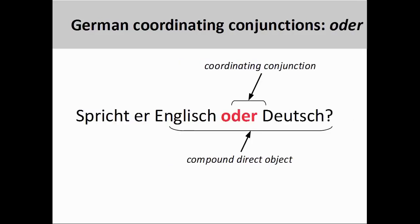The coordinating conjunction oder, meaning OR, is used when presenting alternatives. These alternatives can be in the form of words or independent clauses. For example, in the sentence 'Spricht er Englisch oder Deutsch?' (Does he speak English or German?), oder is used to form an alternative between the languages that the subject speaks. Both languages are the direct objects of the verb spricht, and therefore form a compound direct object comprised of two words and a coordinating conjunction.